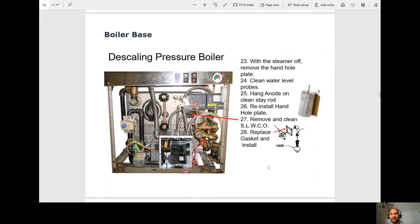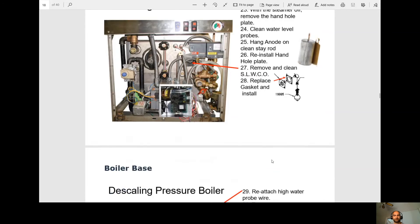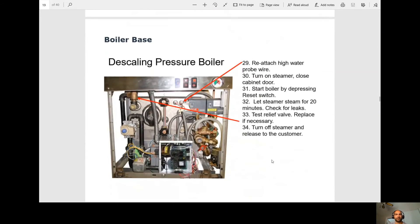Now with the steamer off, remove the handhold plate. You're going to clean the water level probes. You're going to hang the anode and clean stay rod. You're going to reinstall the handhold plate. You're going to remove and clean the secondary low water cutoff, which is located right here. And then replace the gasket. At this point, you're going to reattach the high water probe. Because we don't want it to overfill, obviously. You're going to turn on the steamer. Close the cabinet door. You're going to start the boiler.